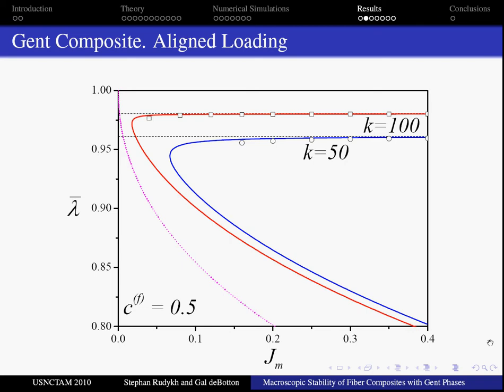We note the good agreement between our analytical estimations and numerical simulations. The failure surfaces obtained by upper estimation and our full analysis coincide and the difference is negligible. In addition we observe that the difference between the results for neohookean and Gent composites is significant only in the range of small locking parameters. The difference rapidly decreases with increase of the locking parameter.